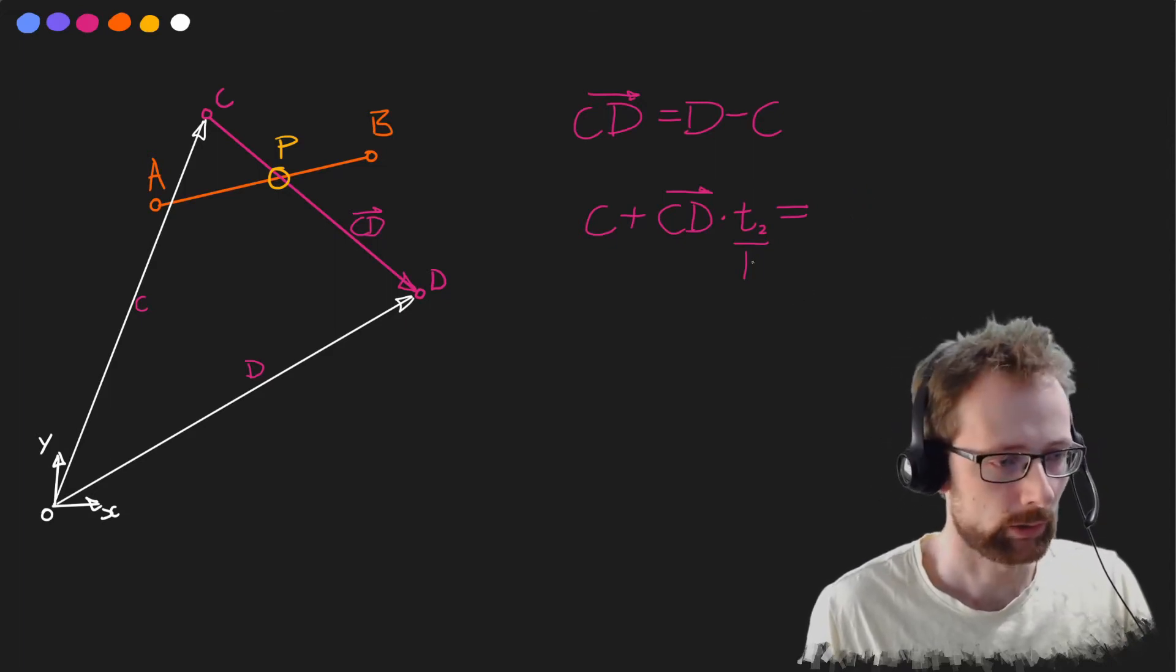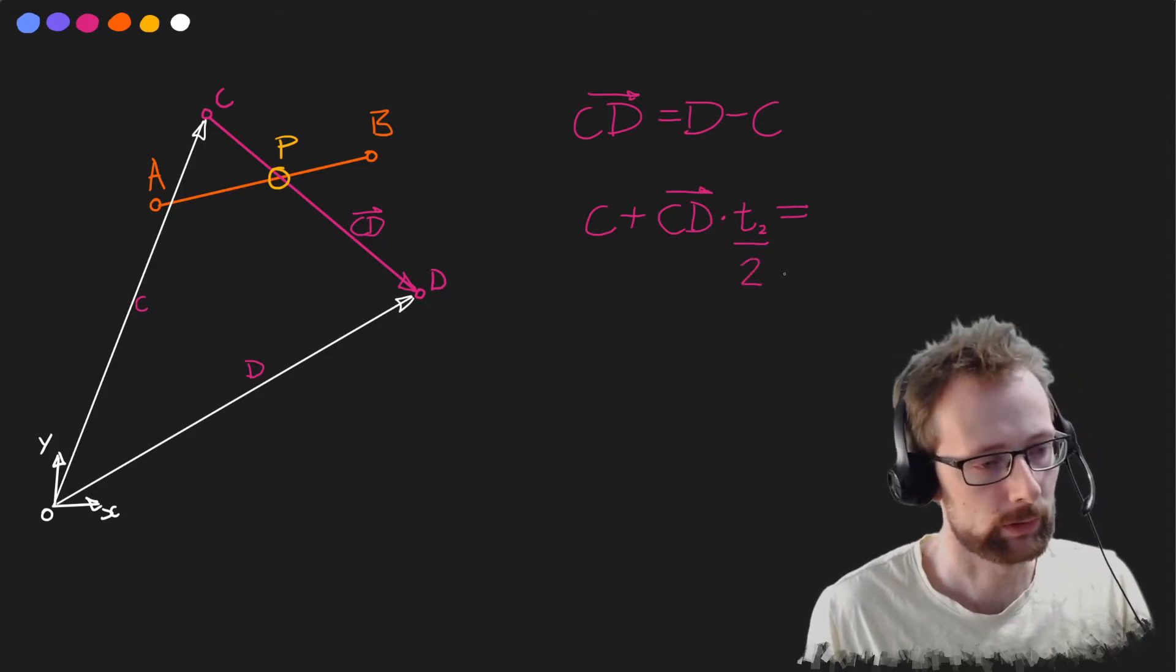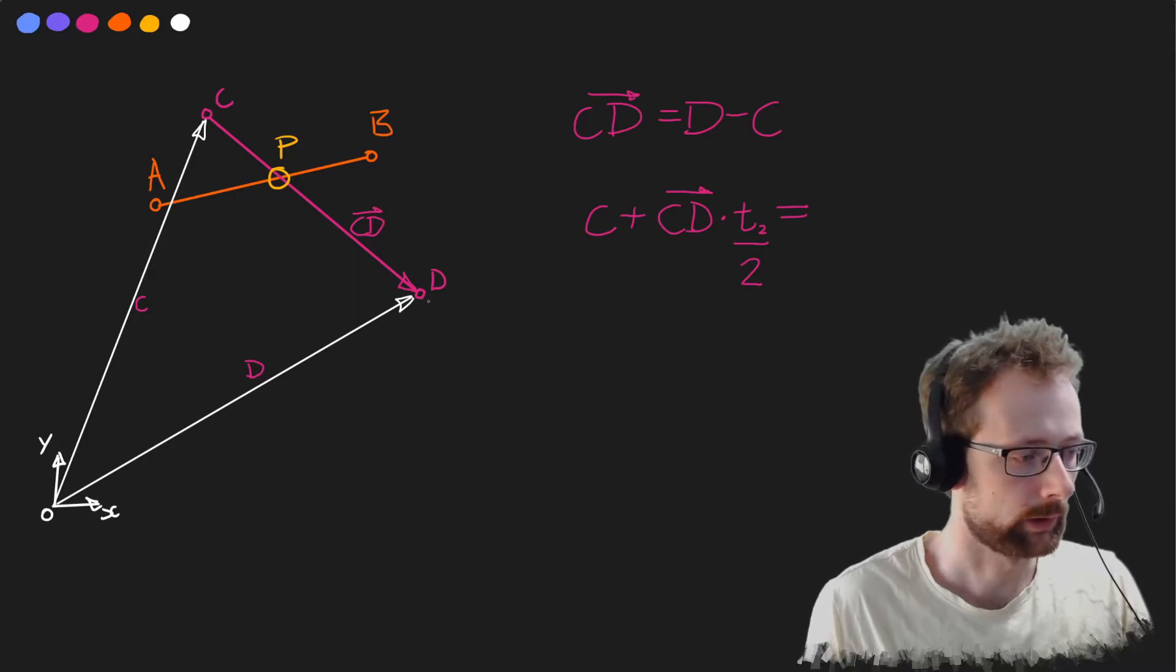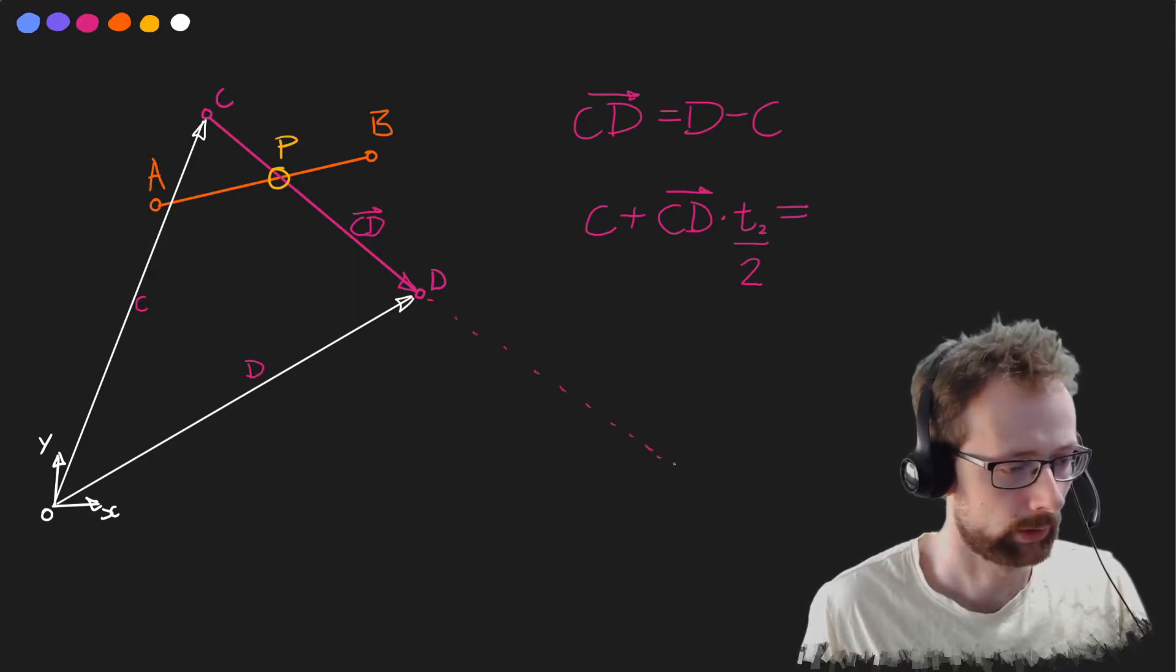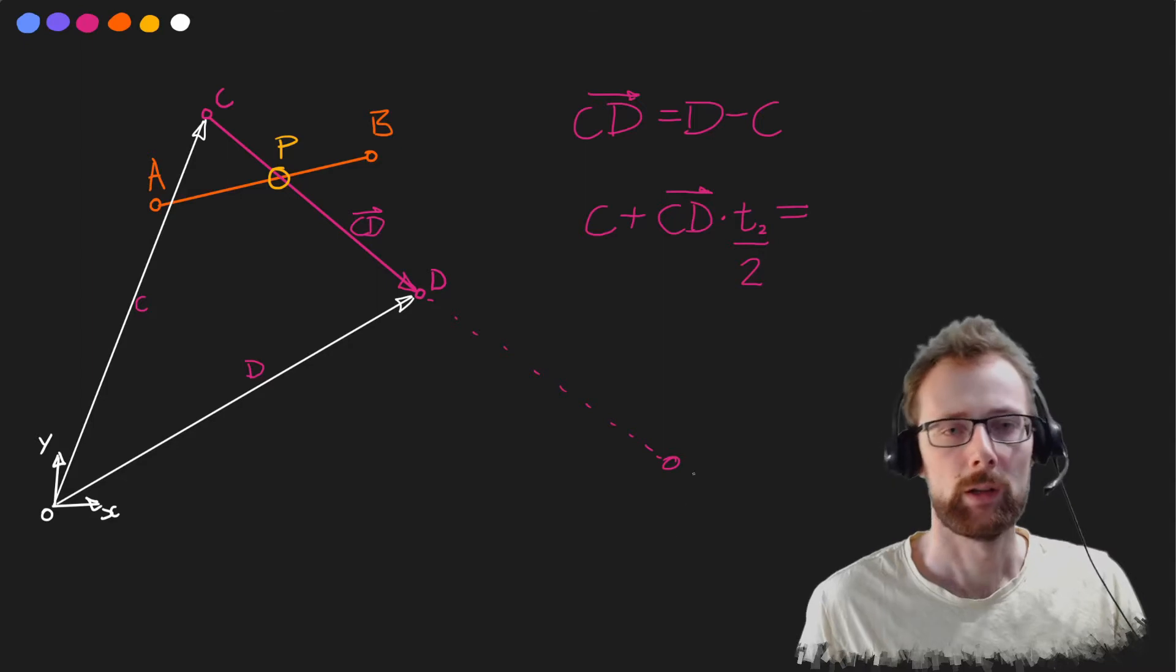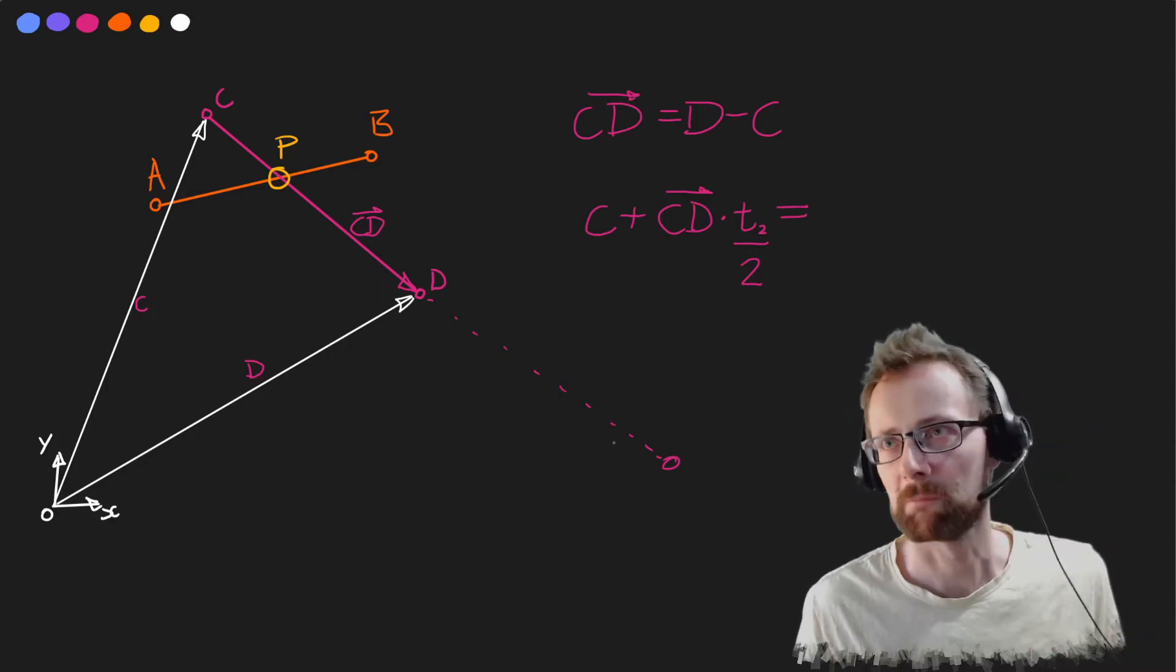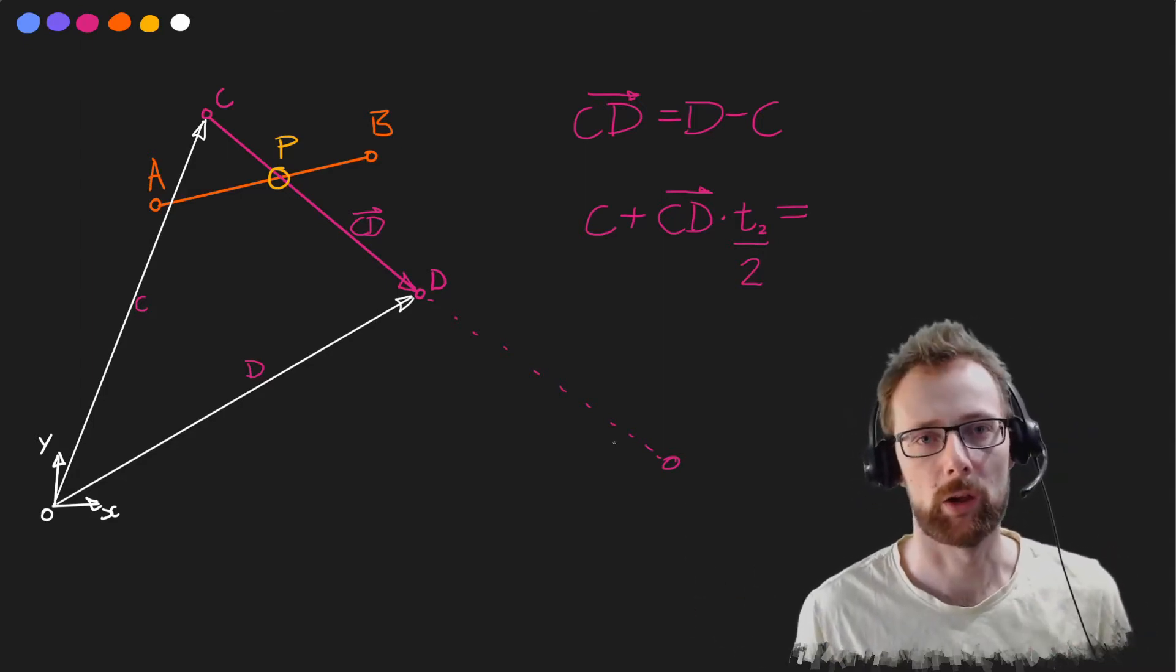But we can even do t2 is equal to 2 for instance, and then we would end up in some point double the length of the line over here. This is called a parametric representation of that line.